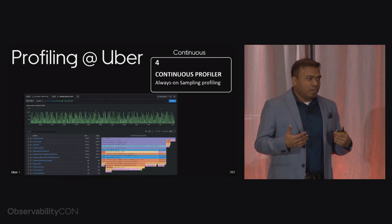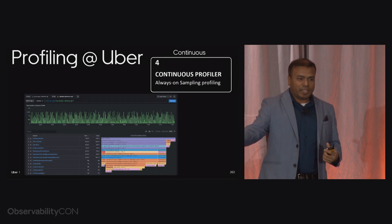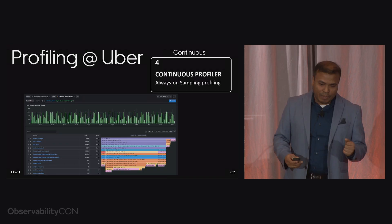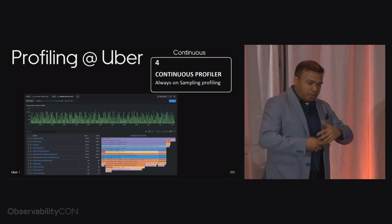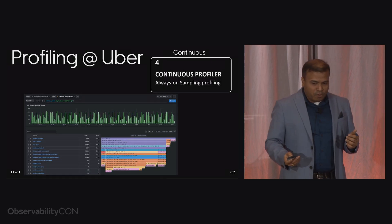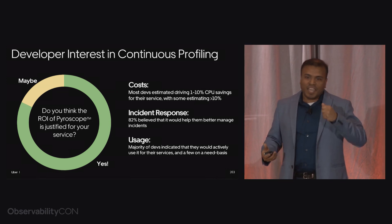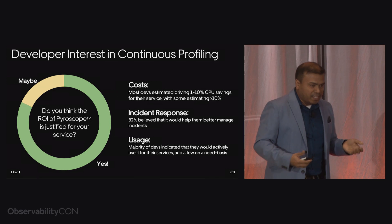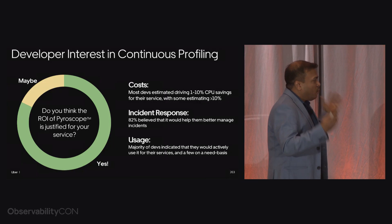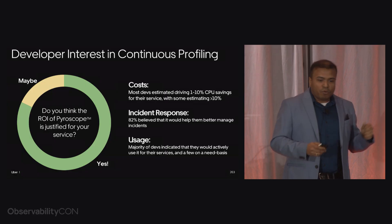At our team, we always look at build versus buy. And when there is something great available externally that we can buy and accelerate our efforts, that's the preferred solution because we can have faster time to market. Before giving Uber engineers a taste of continuous profiling, like any engineering org, we did a survey. We showed them a spreadsheet with how much it would cost for their service and the potential ROI. What we heard back was that mostly everyone said yes — there were some maybes, but no one said no. Everybody agreed it would help them improve their services.